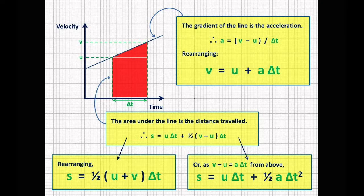This is a velocity versus time graph. If you take the gradient of the line, or the slope of that line, the way you do it is you do rise over run. Now the rise would be v minus u, because the top of it is v, the bottom of that is u.